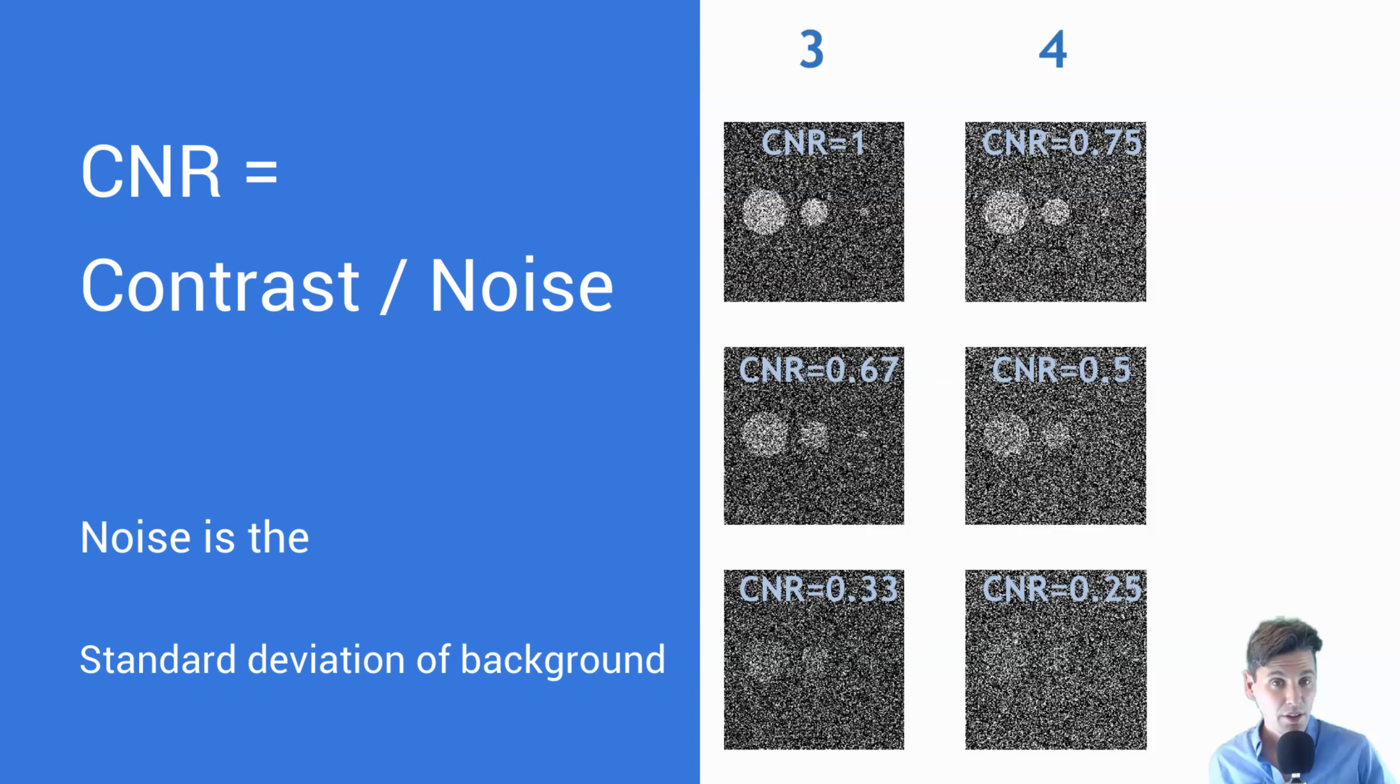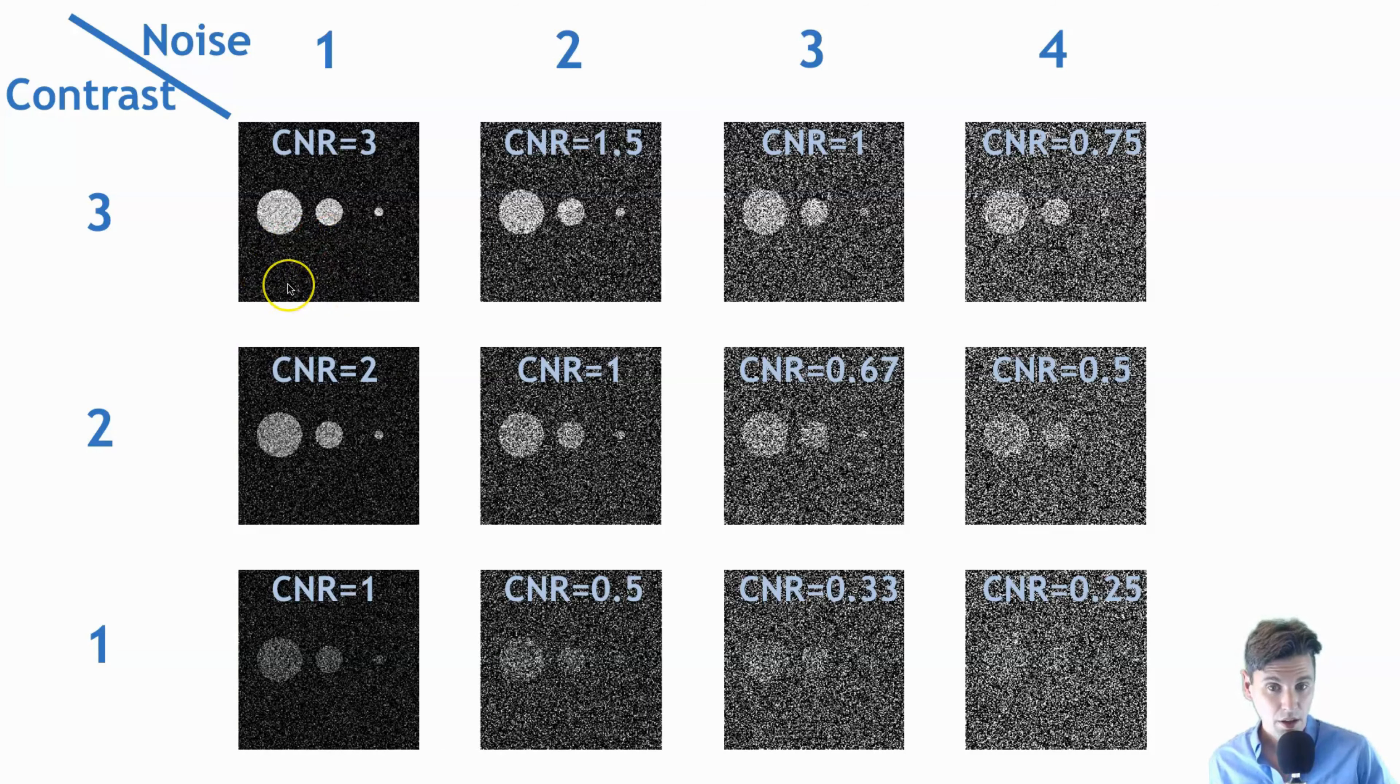And then the contrast to noise, like we talked about, is the ratio of that contrast level to the noise that's in the background here. So obviously if there's more contrast and less noise, it's going to be easier to see.